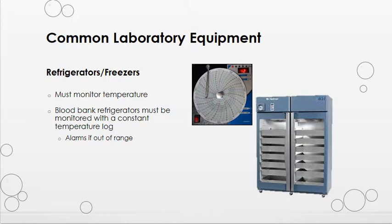Refrigerators and freezers are also found in most departments in the lab. These require temperature to be monitored and logged according to protocol — this may be every 24 hours, 12 hours, 8 hours, etc. Blood bank refrigerators have more stringent guidelines which require temperature to be recorded constantly. The image here shows a temperature monitor that records temperature constantly, with a round piece of paper, and those records must be saved for a certain amount of time per your accrediting agency.